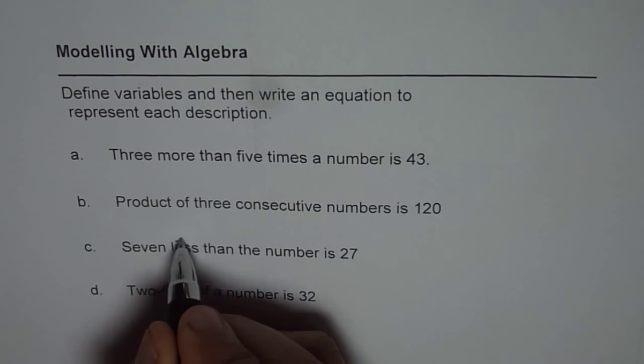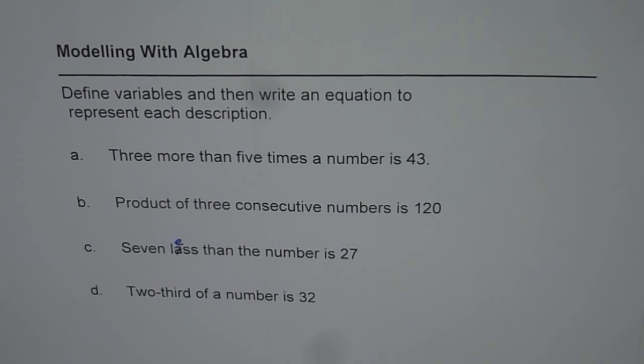C is 7 less than the number is 27 and the last one is 2 third of a number is 32. So you can pause and write your equations and then check with my solution.